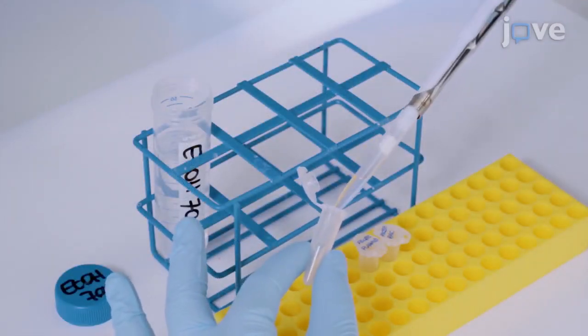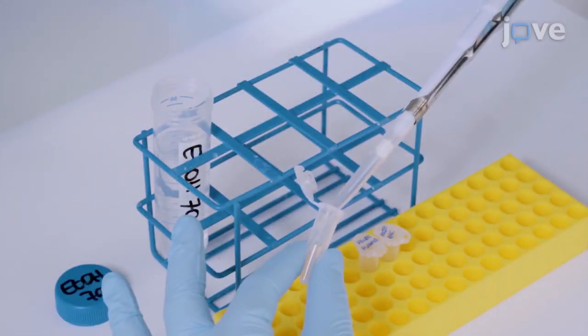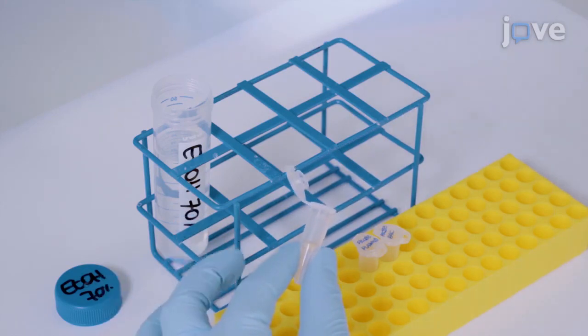After discarding the supernatant, wash the pellet two times with 500 microliters of 70% ethanol.